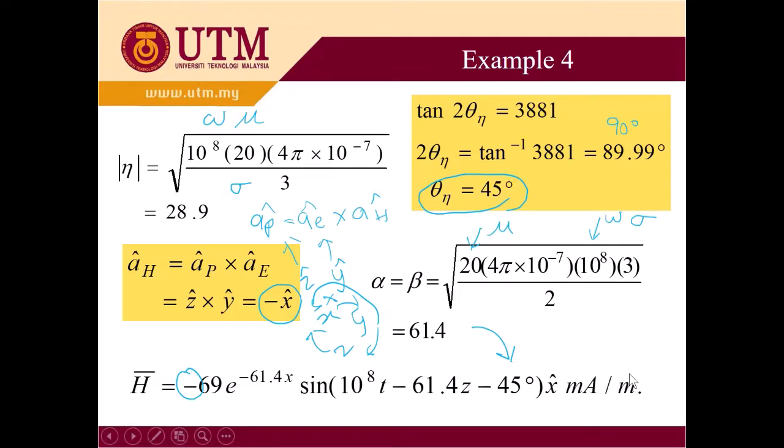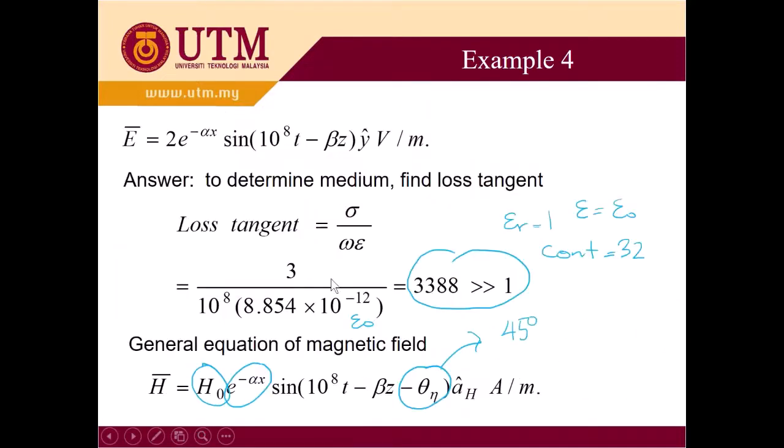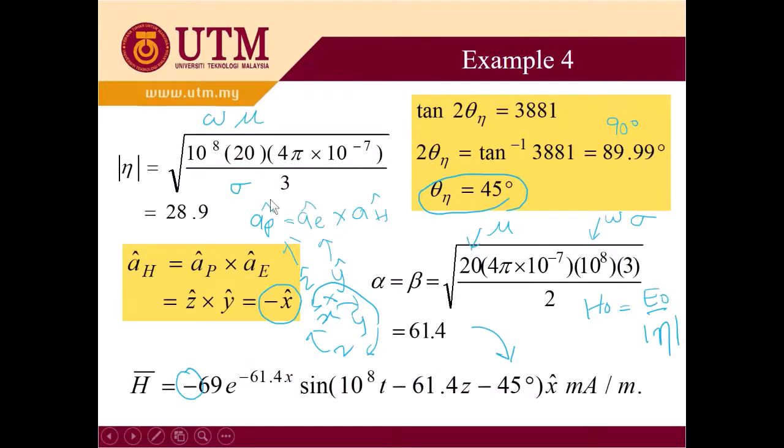Something not showing is how to determine H_0. It's not given here. But H_0 is basically E_0 divided by the magnitude of intrinsic impedance. So you have to divide E_0. In this question E_0 is 2. So 2 must be divided by 28.9. You get 69 milli. So we settle here.